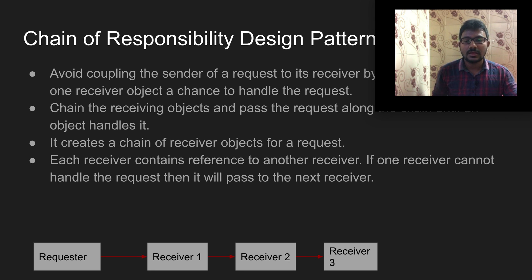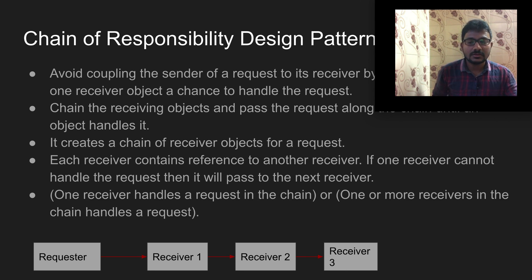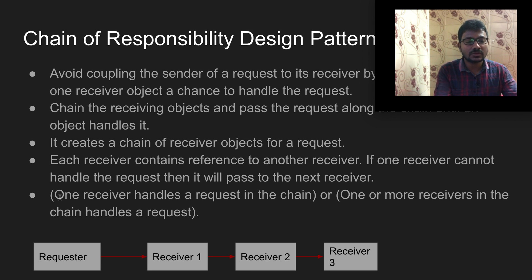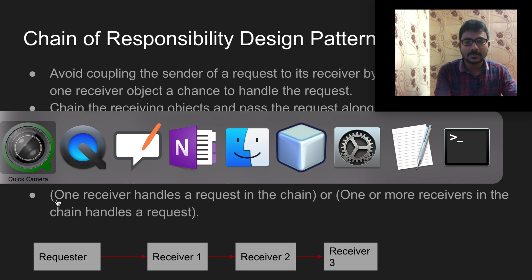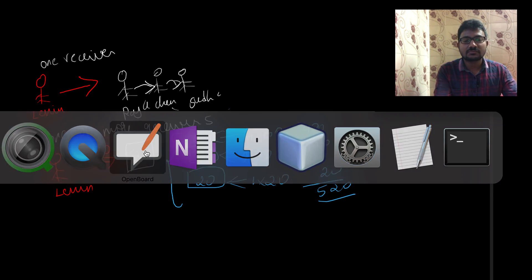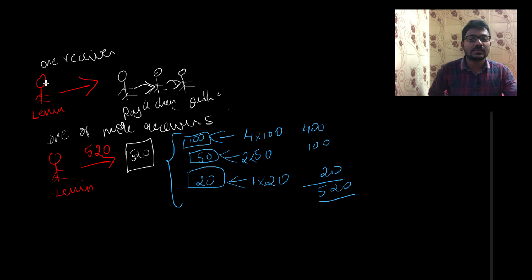There are two categories by which the chain of responsibility design pattern can be implemented. The first category is where one receiver handles the request in the chain. The second category is where one or more receivers in the chain handle the request together.